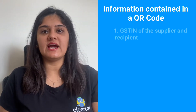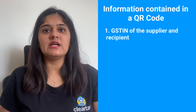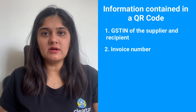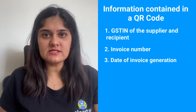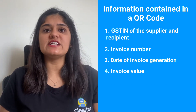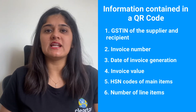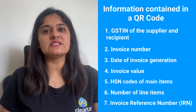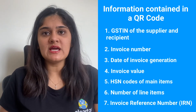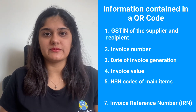The GSTIN of the supplier and the recipient. The invoice number. The date of generation of the invoice. The invoice value. The HSN codes of the main items. The number of line items. And the invoice number as generated on the IRP. Thank you.